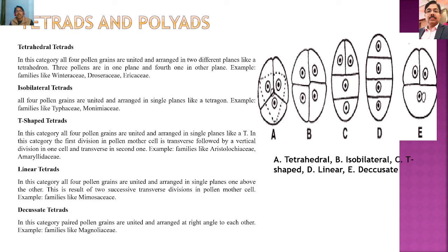In isobilateral tetrads, all four pollen grains are united and arranged in a single plane like a tetragon. Diagram B shows this tetragon-like structure where all cells are present in one plane.